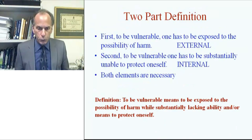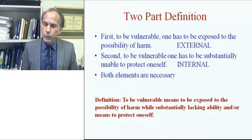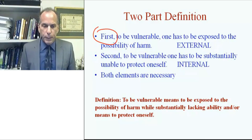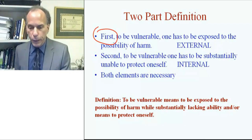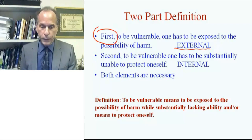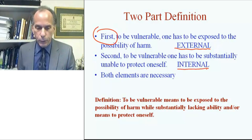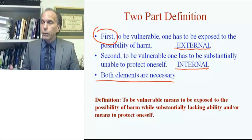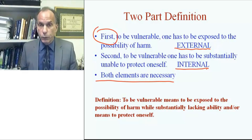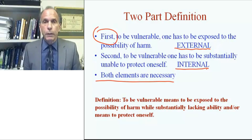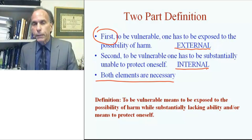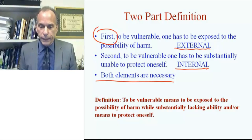To further flesh out the definition of vulnerability, I would like to add that it is really a two-part definition. First, to be vulnerable one has to be exposed to the possibility of harm — this is what I call the external condition. Second, to be vulnerable one has to be substantially unable to protect oneself — this is the internal component, and both elements are necessary. Someone may be unable to swim and hence be vulnerable to drowning, but if they never swim in a body of water or never go on a boat, then one cannot be considered vulnerable unless they're in that external situation.